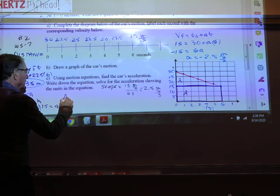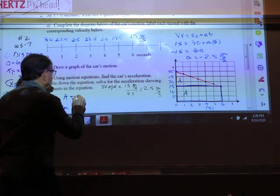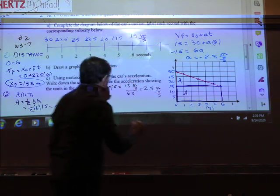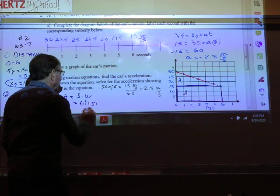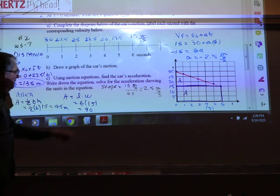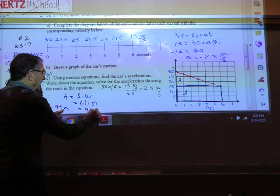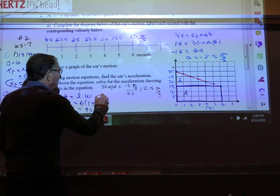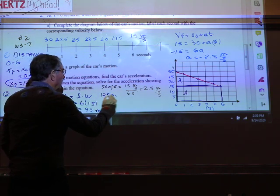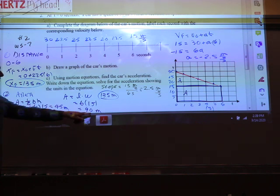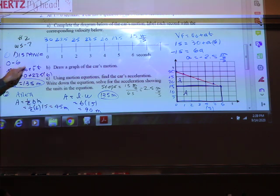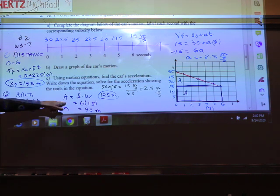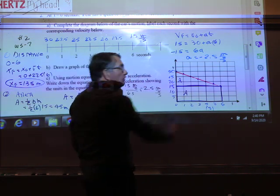Let's do area again. Area for the rectangle is length times width. The length is six. The height is 15. Six times 15 is 90. If I add 90 plus 45, I will get 135 meters. So I can do the problem now two ways. Equation or by area. And the area has two areas. Triangle and rectangle.